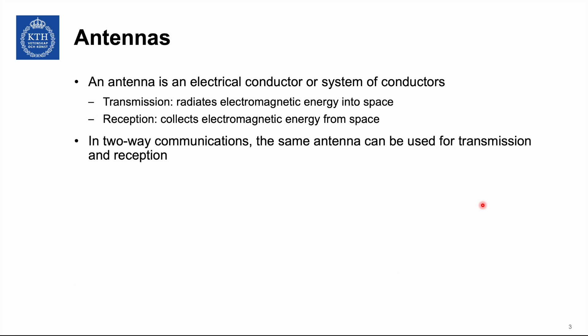When it comes to antennas, an antenna is an electrical conductor or system of conductors used both at the transmitter and at the receiver. At the transmitter, the antenna radiates electromagnetic energy into space, so radio waves propagate in different directions. At the receiver, the antenna collects electromagnetic energy from space — signals arriving from different directions.